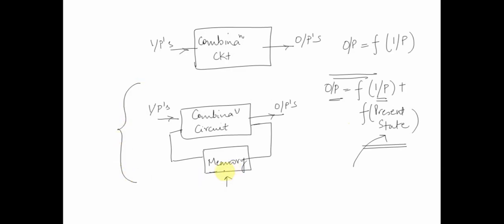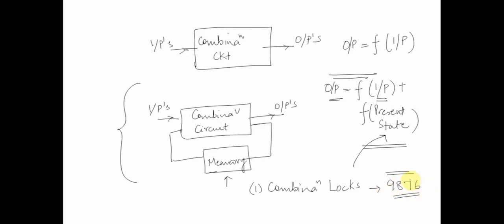We will be talking about memory elements and some examples of latches as sequential devices. If we look at some real-life examples of sequential devices: one example is combination locks, which will only open if a password like 9876 is supplied in a particular order — so the ordering becomes very important. A second example would be elevators, which move up and down and open or close in response to buttons pressed on different floors, making judgments based on current state.